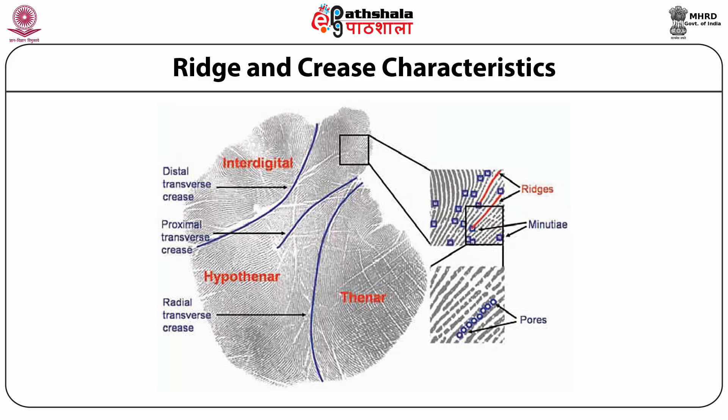Some flexion creases are also associated with chromosomal abnormalities, such as the simian crease. This crease is on the distal part of the palm, starting from the ulnar side and continuing to the radial side. As such, there would be two creases in the palm rather than the usual three. Such a crease is called the simian crease, for it is commonly found in simians.